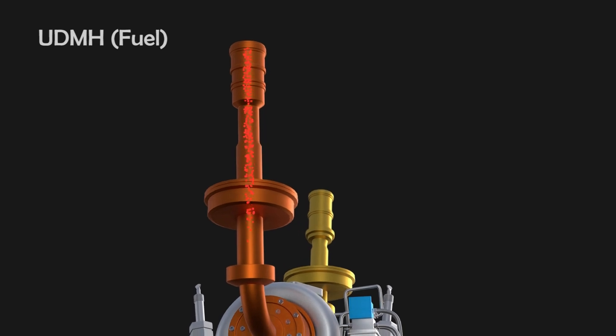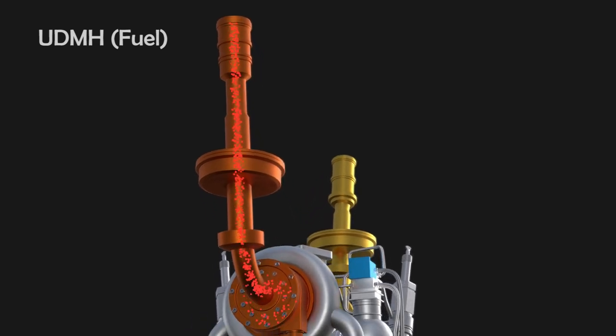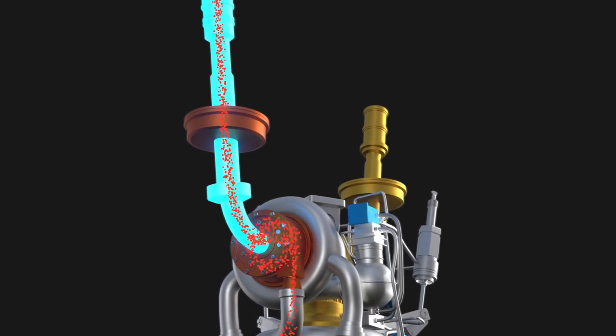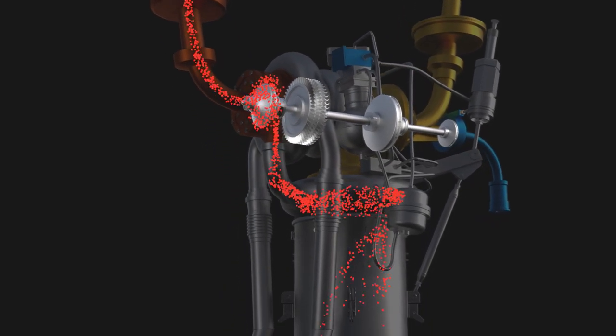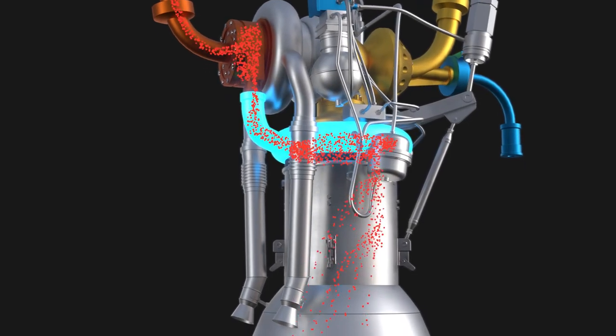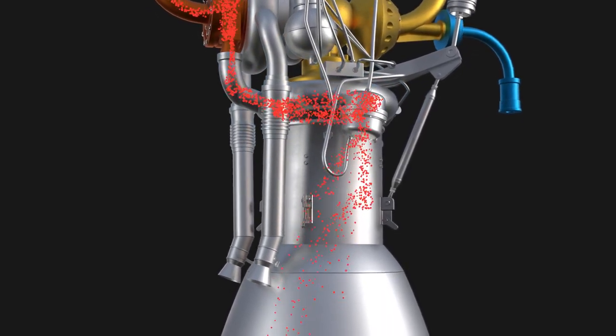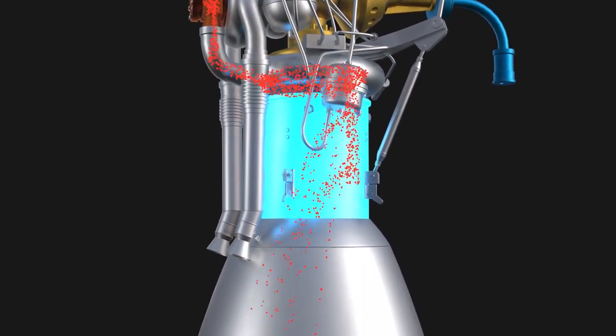The fuel comes down from the main fuel tank through this main fuel line, and it is supplied to the centrifugal fuel pump. Now the high-pressure fuel from the pump flows through the high-pressure manifolds. It is delivered to the combustion chamber through the fuel nozzles.